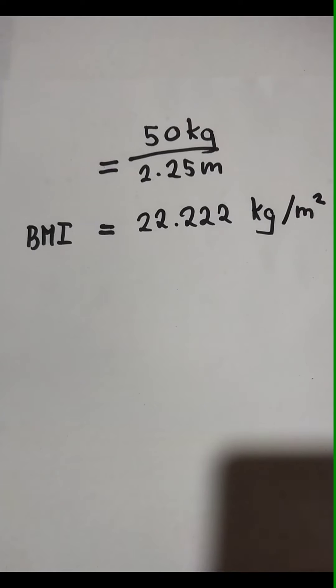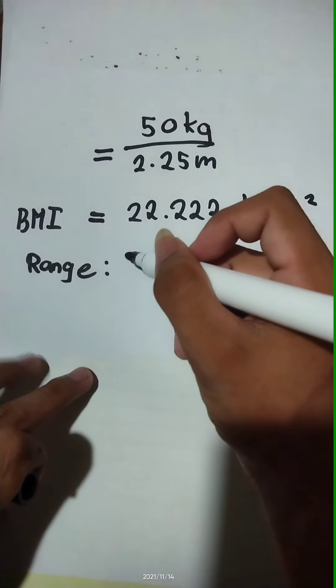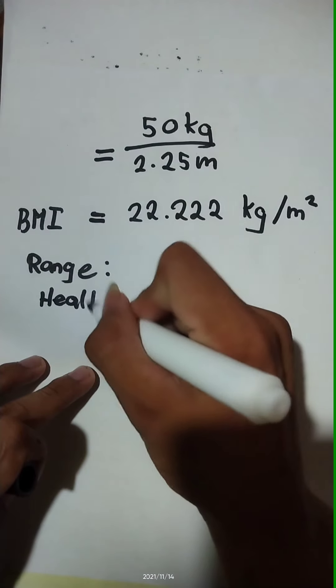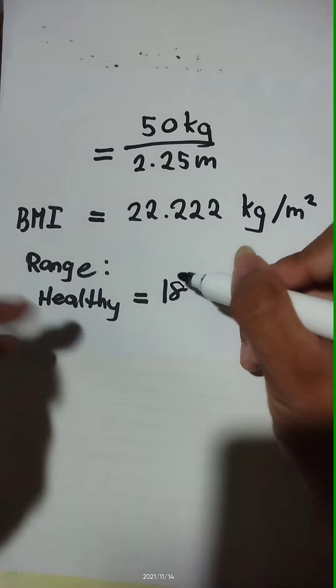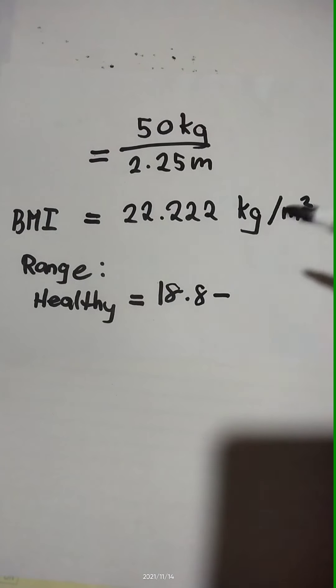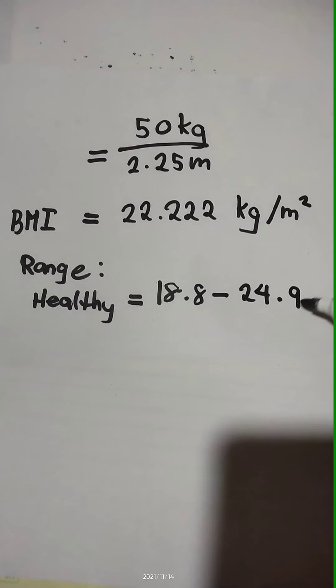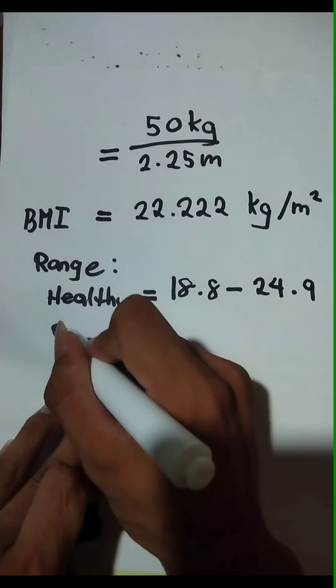This time we will identify whether I am healthy, overweight, or obese. So the range of healthy BMI is within 18.8 to 24.9. That is healthy BMI.